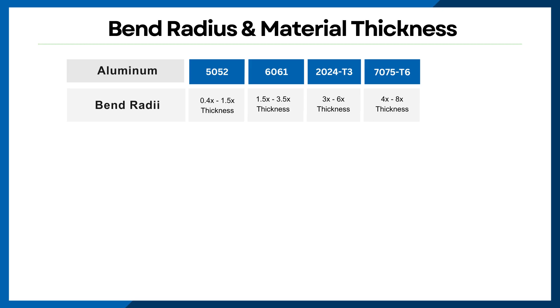On the other hand, when it comes to strong aluminum alloys like 6061, 2024-T3, and 7075-T6, the bend radius is crucial — if it's too small, the bend will crack. For 6061 aluminum, we recommend a bend radii of 1.5 to 3.5 times the thickness. Meanwhile, if you're using aluminum 2024-T3, aim for a bend radius of 3 to 6 times the thickness.